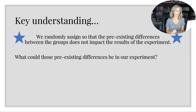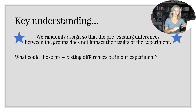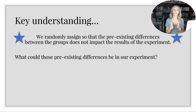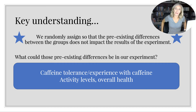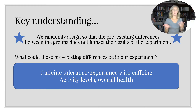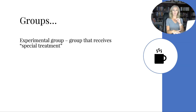Here's another key understanding: we randomly sample so the sample is representative, but we randomly assign so that any pre-existing differences between the groups do not impact the results of the experiment. In our caffeine experiment, pre-existing differences could include caffeine tolerance, experience with caffeine, activity levels, or overall health. If everyone in your experimental group is already caffeine-addicted and has built up a tolerance, the results won't reflect the true impact of caffeine.